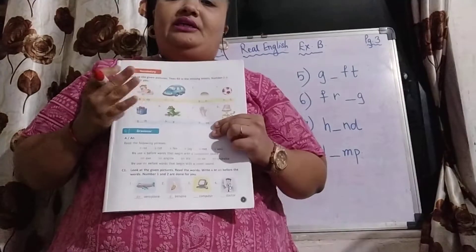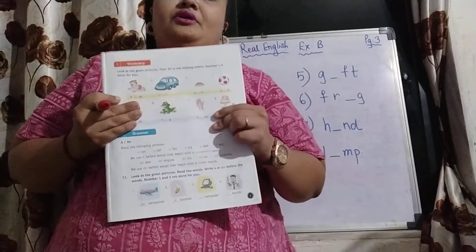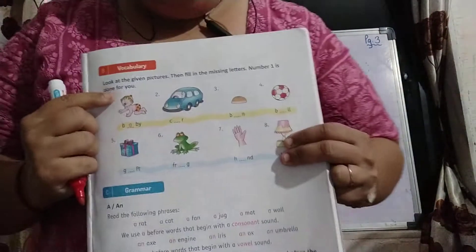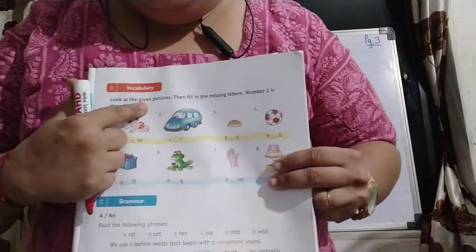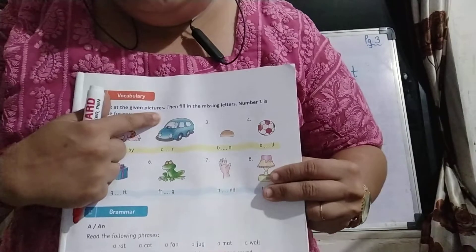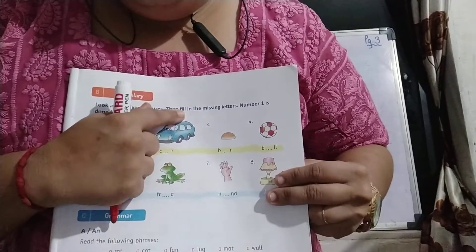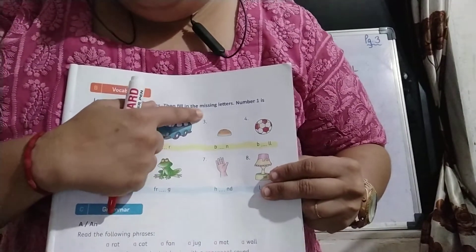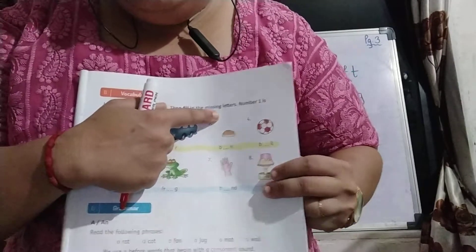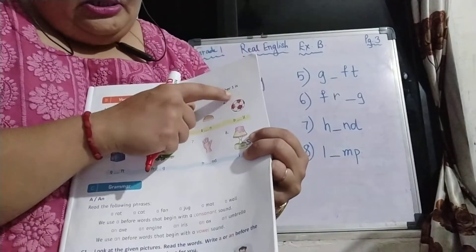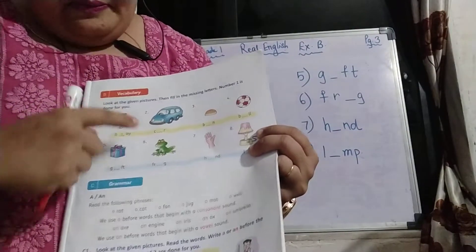Today I am taking just your vocabulary. See this — what you have to do in this? Look at the given picture, then fill in the blanks. Fill in the missing letters. Number 1 is done for you.